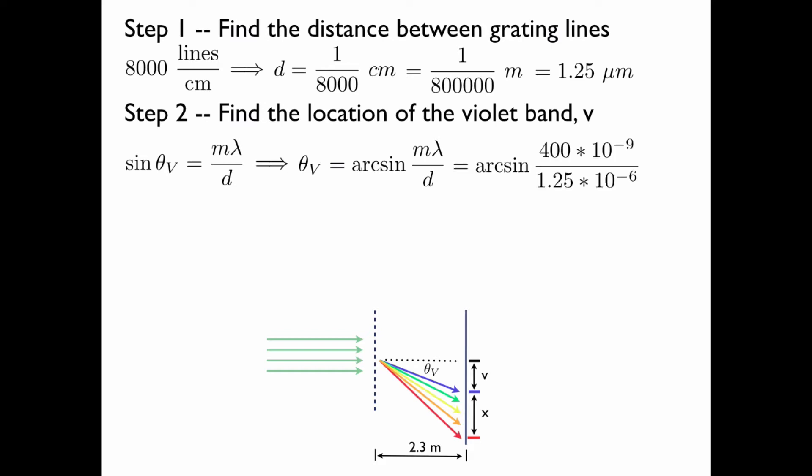And then we plug in what we know. The violet band has a shorter wavelength than the red band, so it's the 400 nanometers that we plug in for lambda. M is 1 because we're looking for the first-order band, and we just found the spacing between the grating lines.